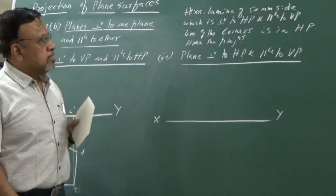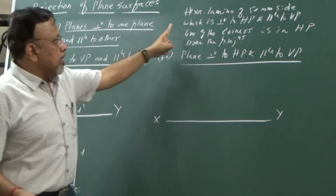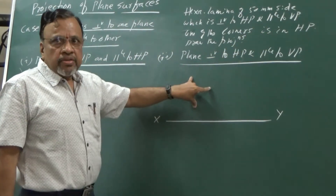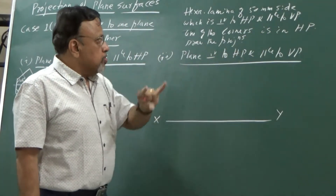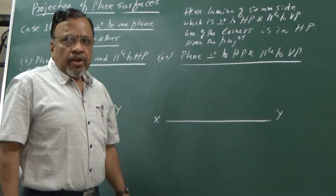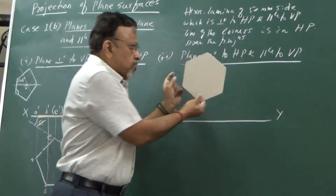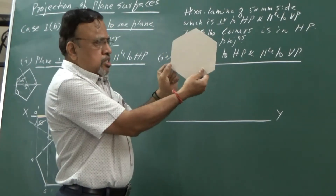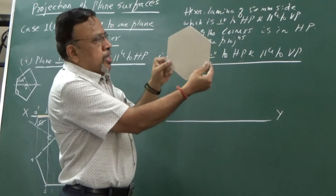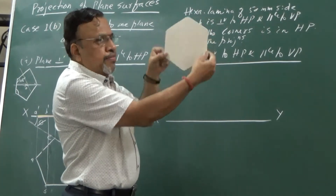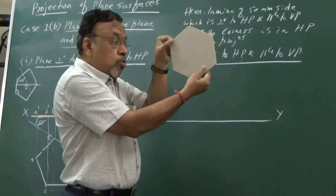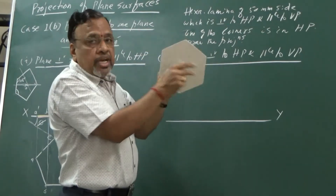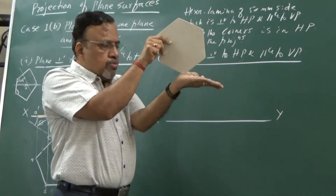Since the lamina is parallel to VP, the true shape and size will be seen in the front view, so I need to start from the front view. Since I can orient it in any fashion and it will still be parallel to VP, but it is given that one of the corners is in HP, I need to hold it in that specific way.